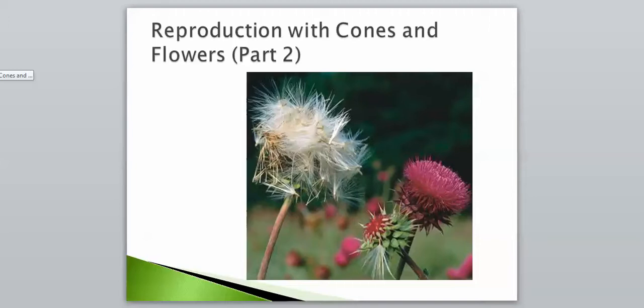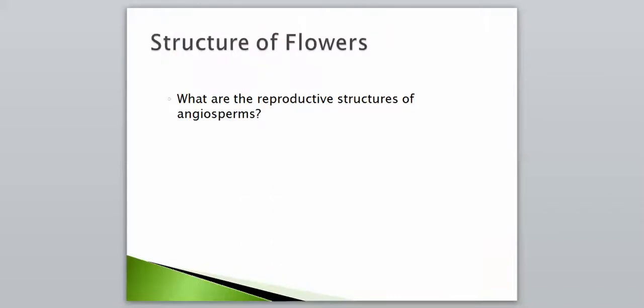Hey, hello, Bio 2. This is Mr. B. We're continuing on with Chapter 24, Section 1, looking at reproduction with cones and flowers. Today, the question that this video is going to ask is: what are the reproductive structures of angiosperms? As we all should know, angiosperms are the flowering plants, so that means our reproductive structures are going to be flowers. Today we're going to take a look at the structure of a flower.